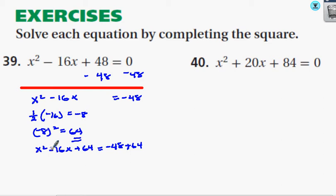This is now a perfect squared trinomial, which means I can write this in factored form, which is going to be x minus 8 quantity squared. This turns into 16.